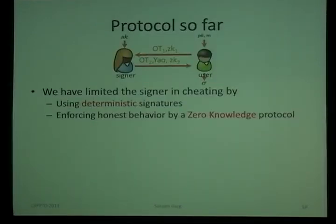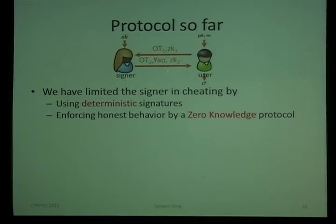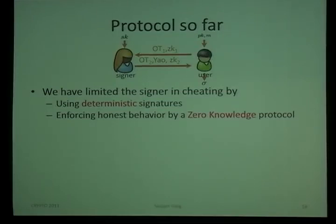So what have we achieved? We have a protocol with the first message from the OT, the first message of the zero-knowledge protocol, the signer's response to the OT message and the garbled circuit, and additionally a proof that the OT message and Yao's garbled circuit are correctly formed. By this, the signer uses deterministic signatures — he cannot arbitrarily choose randomness — and we enforce correct behavior via the zero-knowledge protocol.